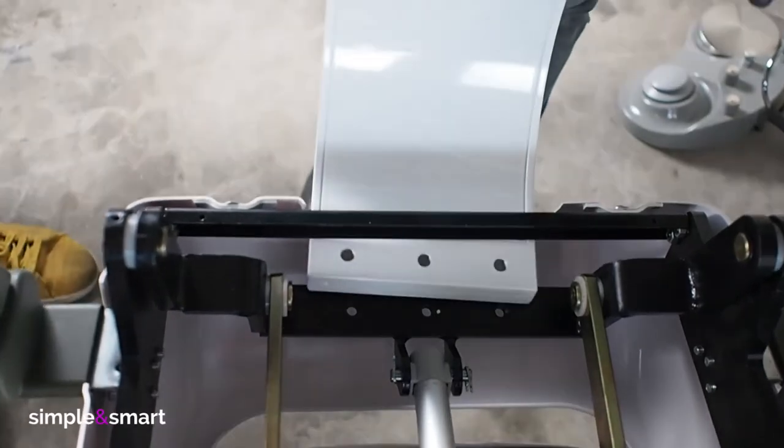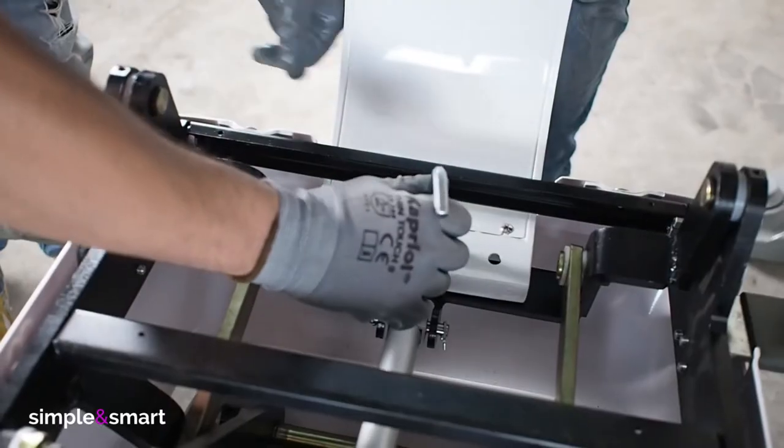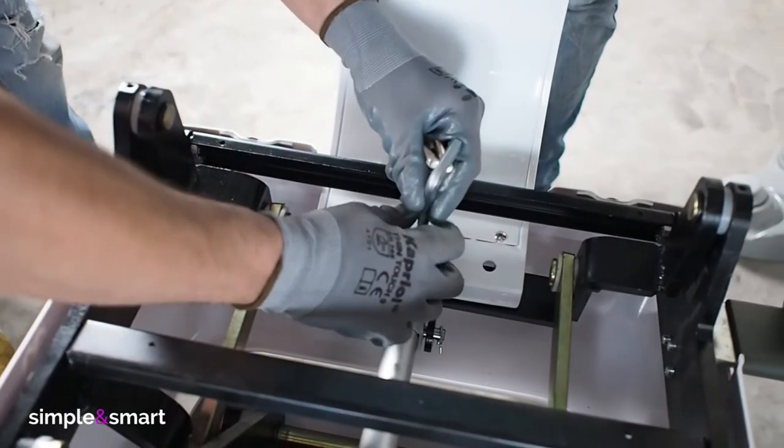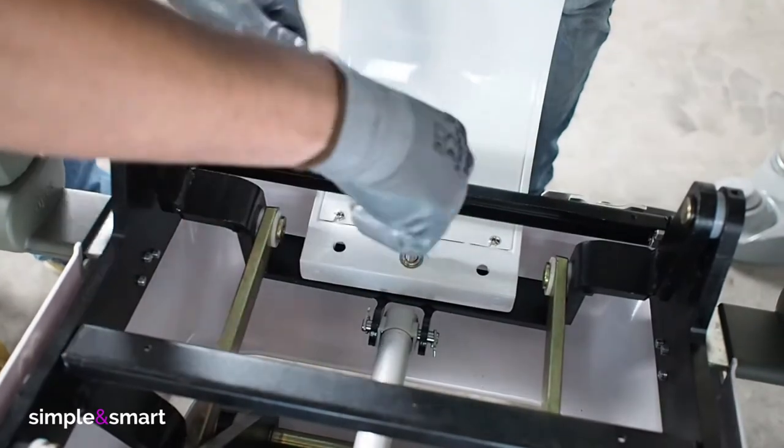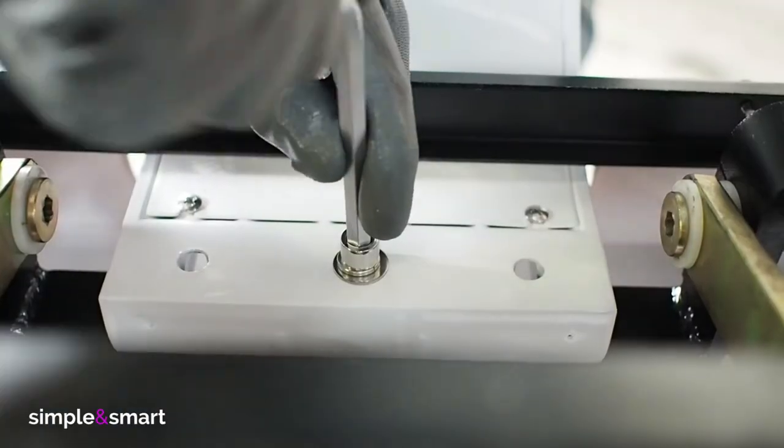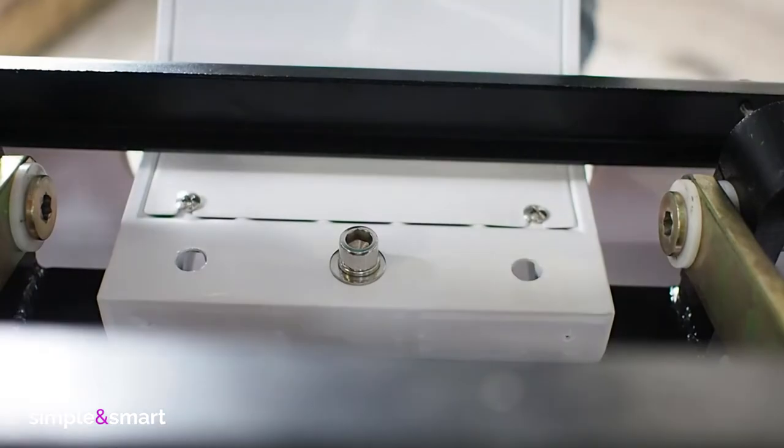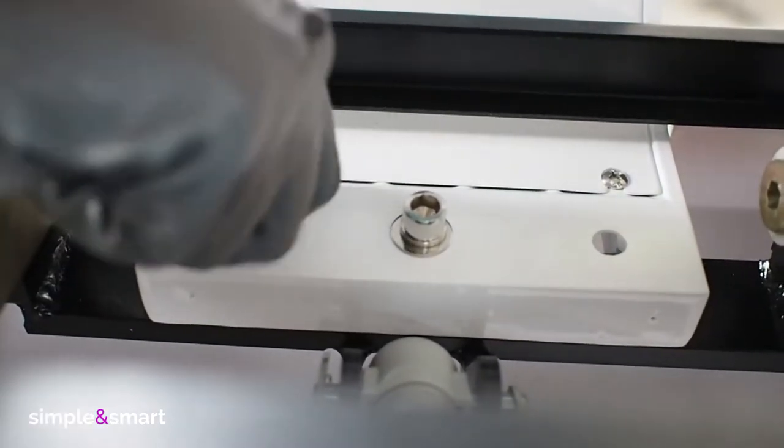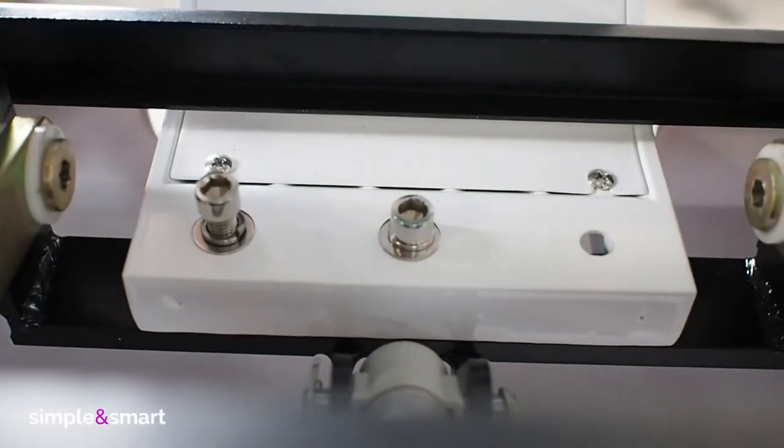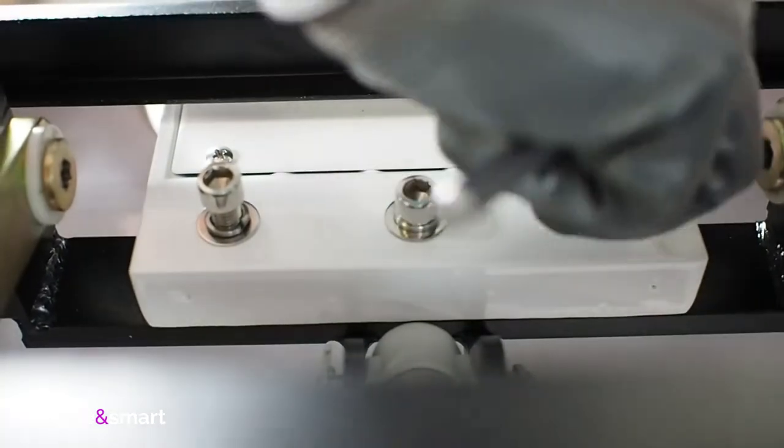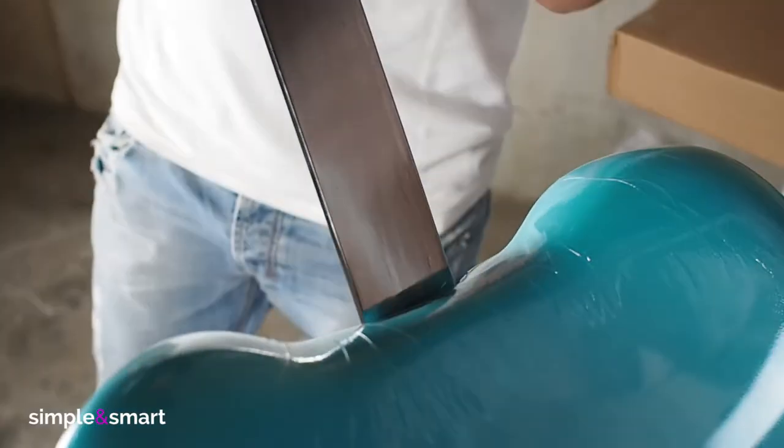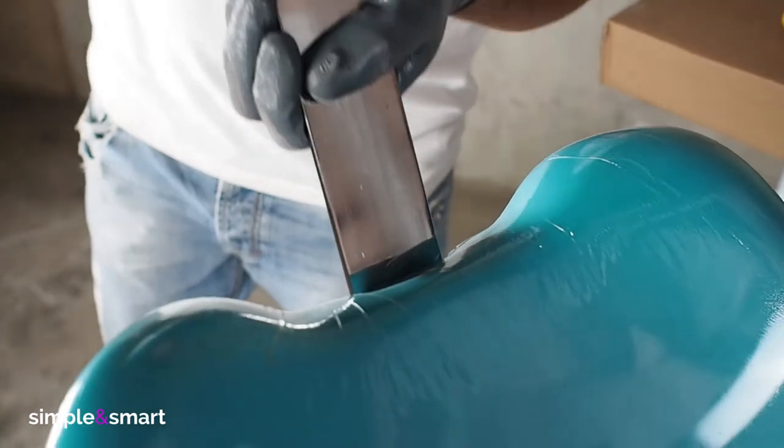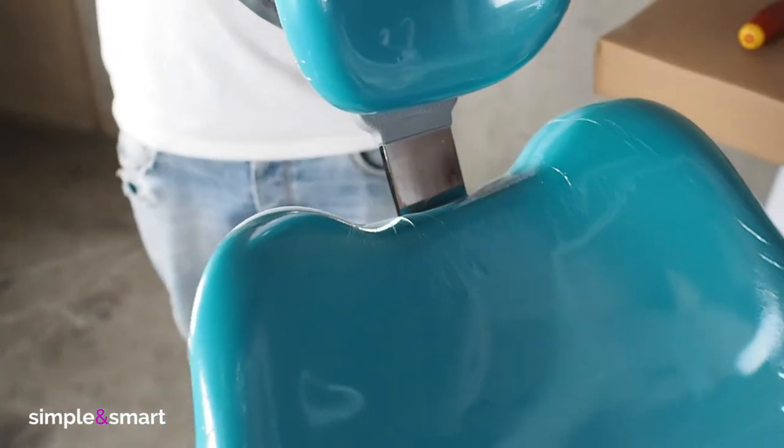Insert the backrest in position and lock with the screws. Push the headrest in the hole you find on the backrest. A mechanical friction will keep it in place.